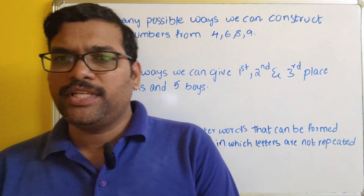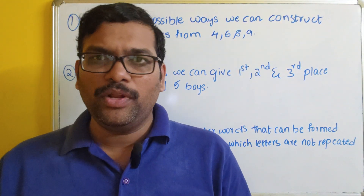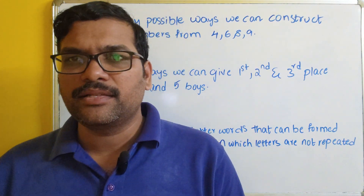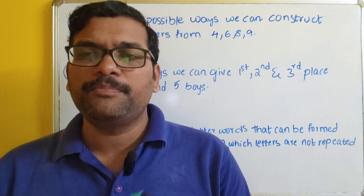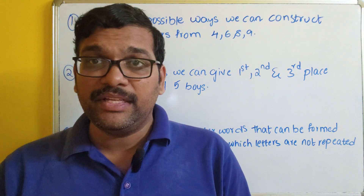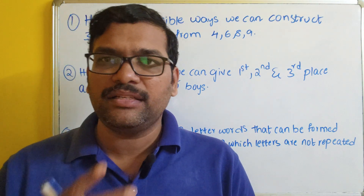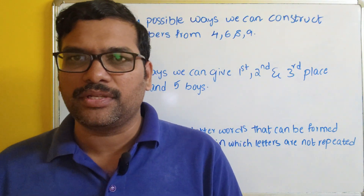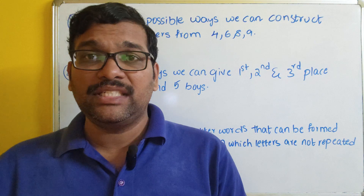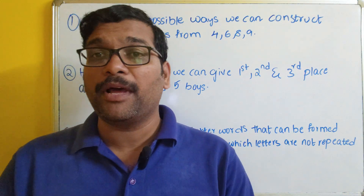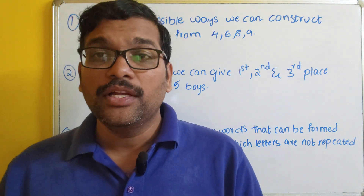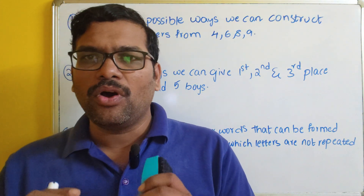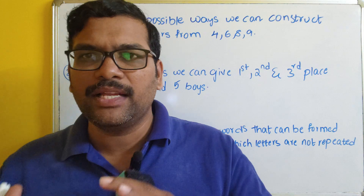Hello friends, welcome back to our channel. In today's session we will see one more concept in discrete mathematics — that is combinatorics, specifically permutations and combinations. In our previous session we covered the complete introduction to combinatorics, which is a part of discrete mathematical structures. The main concepts of combinatorics are the product rule, permutations, and combinations. Today's session we will see a few very simple problems on permutations as well as combinations.